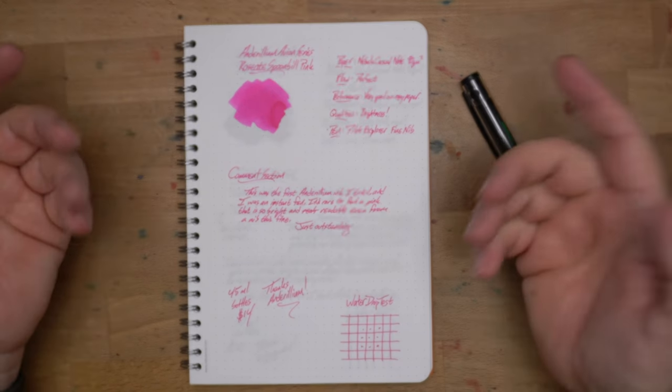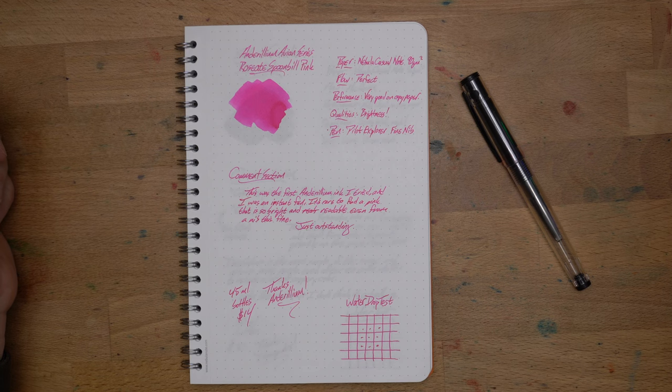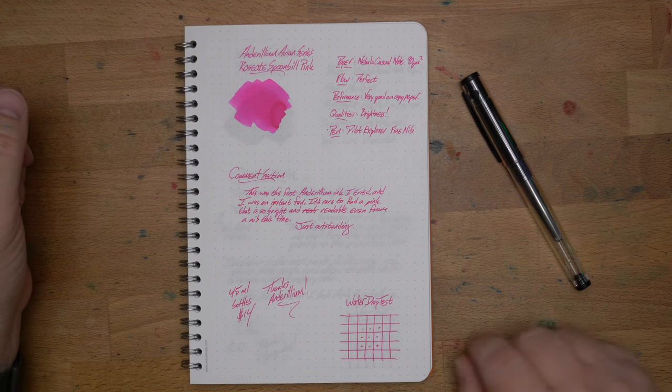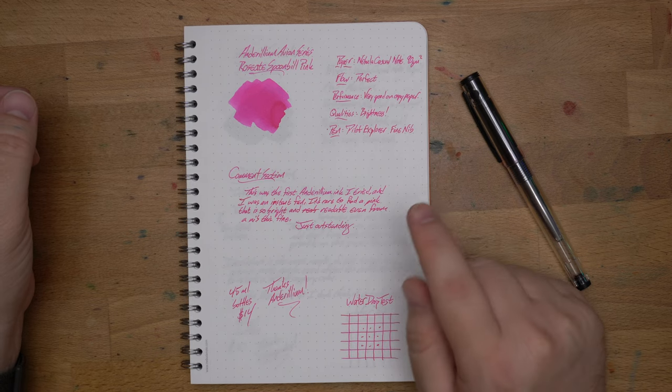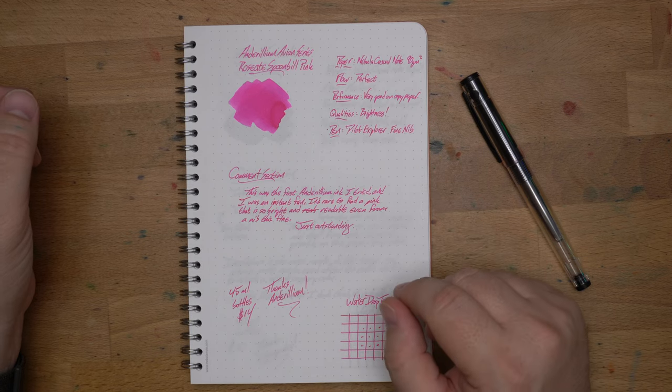and it comes out real nice. This is the color you get in the swatch, but it's no different from what you get in the writing portion itself, which I think is pretty outstanding. Flow, perfect. Performance, really good on the copy paper. Very, very good on the copy paper.